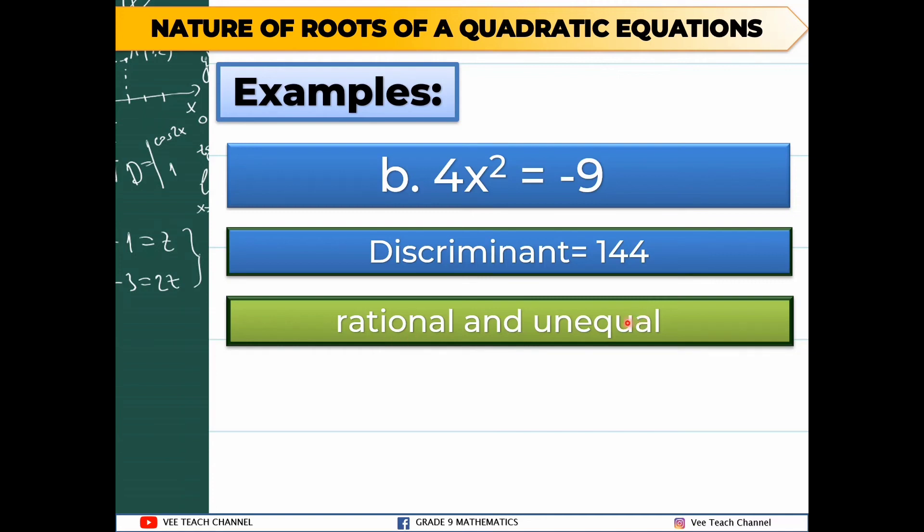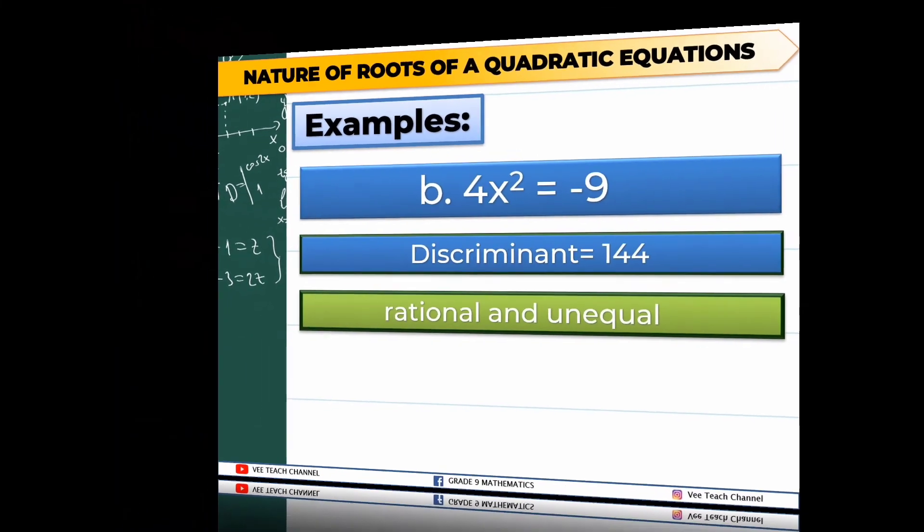If the numbers you get are positive but not a perfect square, the nature of the roots is irrational and unequal.